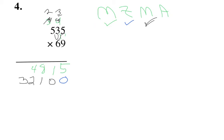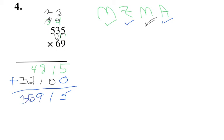The last step is to add those two numbers together. Five plus zero is five. One plus zero is one. Eight plus one is nine. Four plus six is... six. And then I have the three. So my final answer is 36,915.